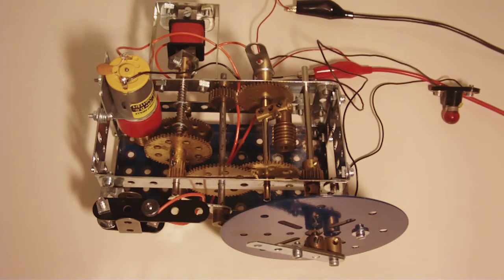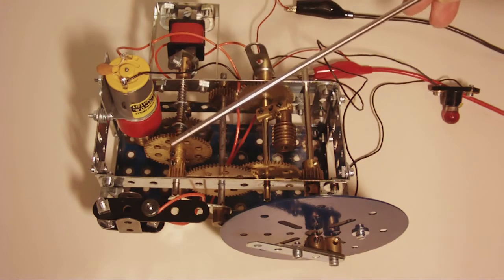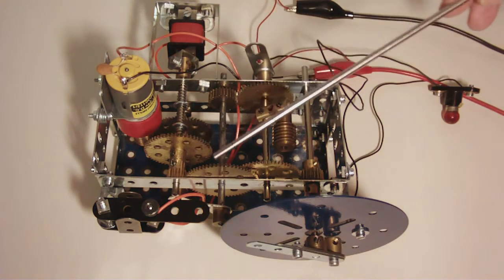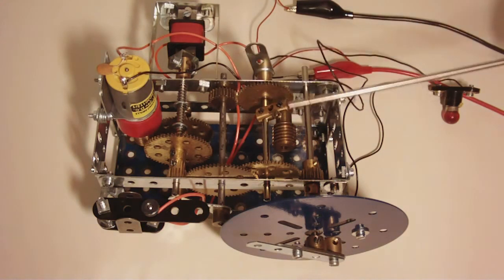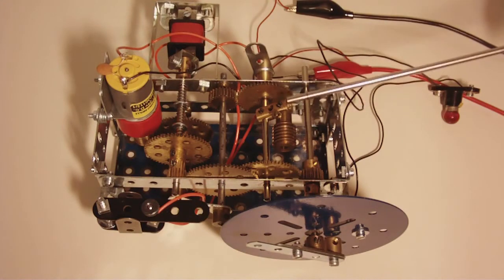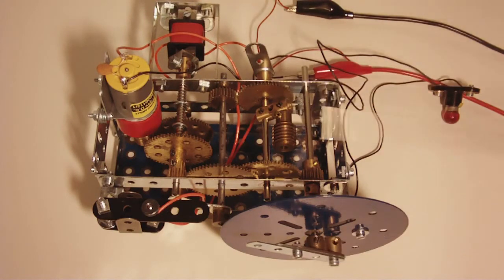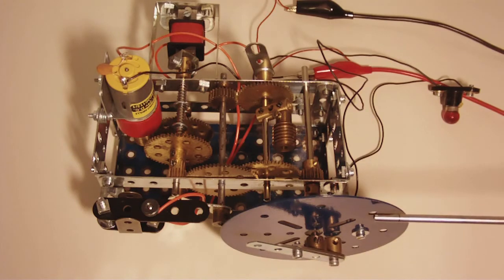To start the timer running, there's an electromagnet at the back here. This pulls this rod and disengages this pinion from this gear wheel. This rod here is weighted, so that goes down and causes the needle to reset over to here.